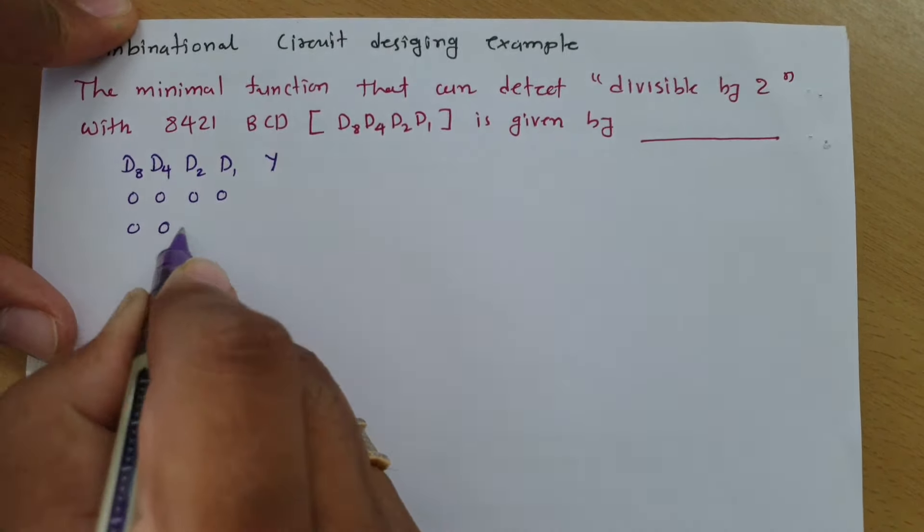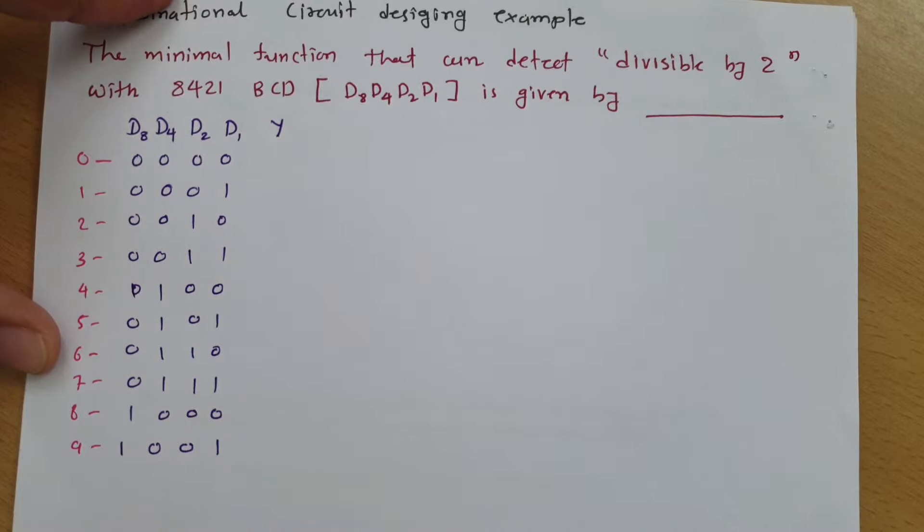If you see the equivalent of 0000, that will be 0, and it will increase up to 9. In BCD we have these digits only, and for combinations other than those, we don't have any BCD code.